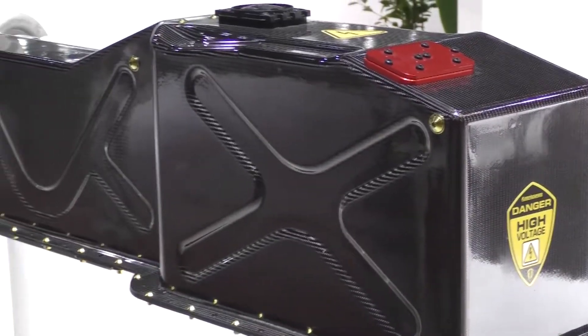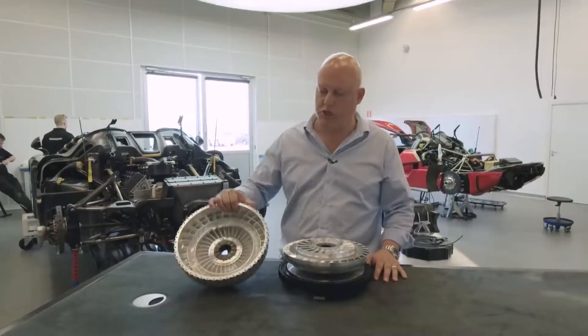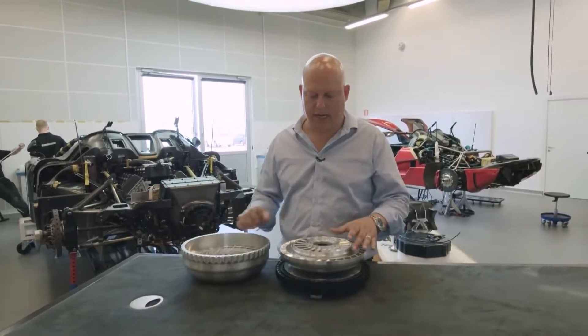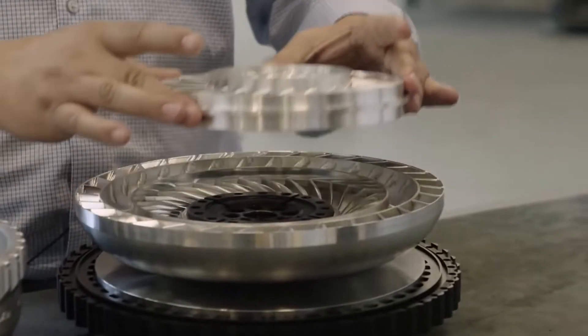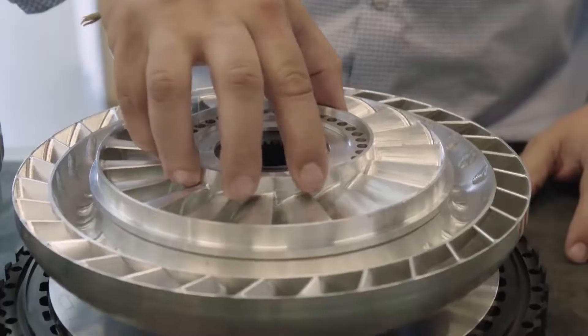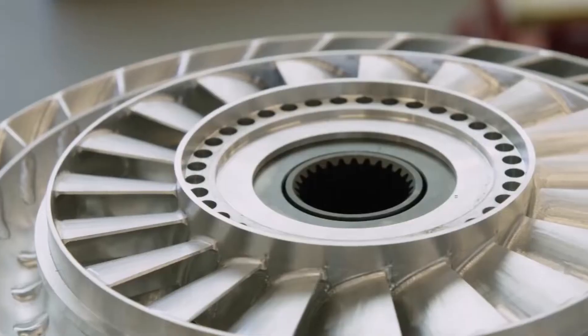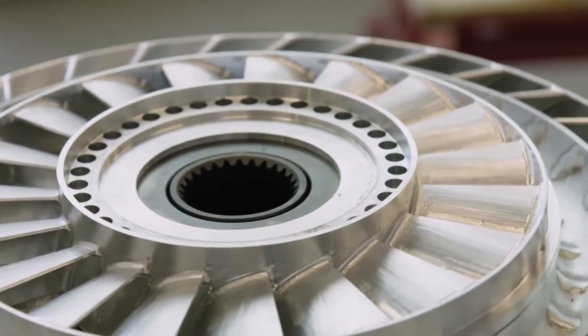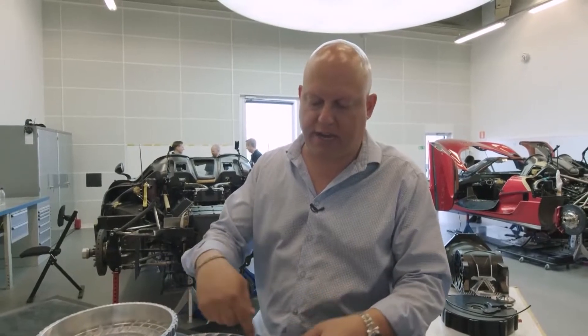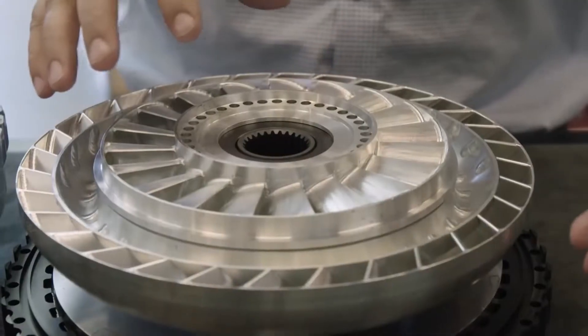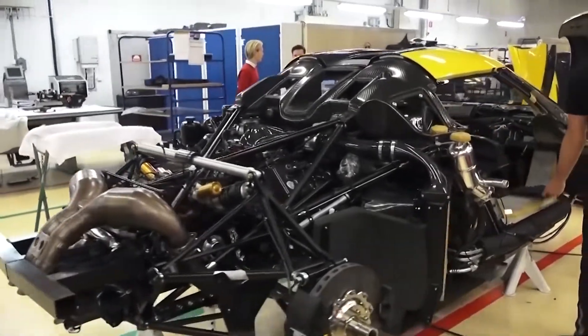The DDS transmission has a 2.73 to 1 reduction ratio, which means that the crankshaft mounted on the ice rotates 2.73 times for every output shaft rotation. Below 48 km per hour, the electric motor takes care of propulsion, and above 48, the hydraulic coupling begins to close and reaches a point where it is completely locked by virtue of a clutch, providing direct and uninterrupted drive to the wheels.